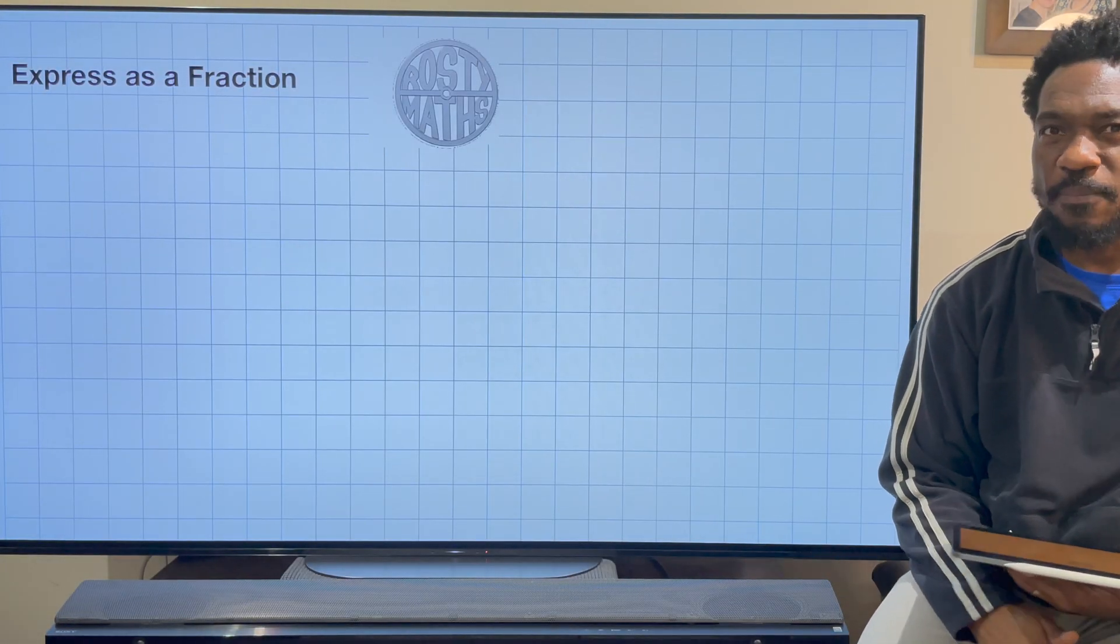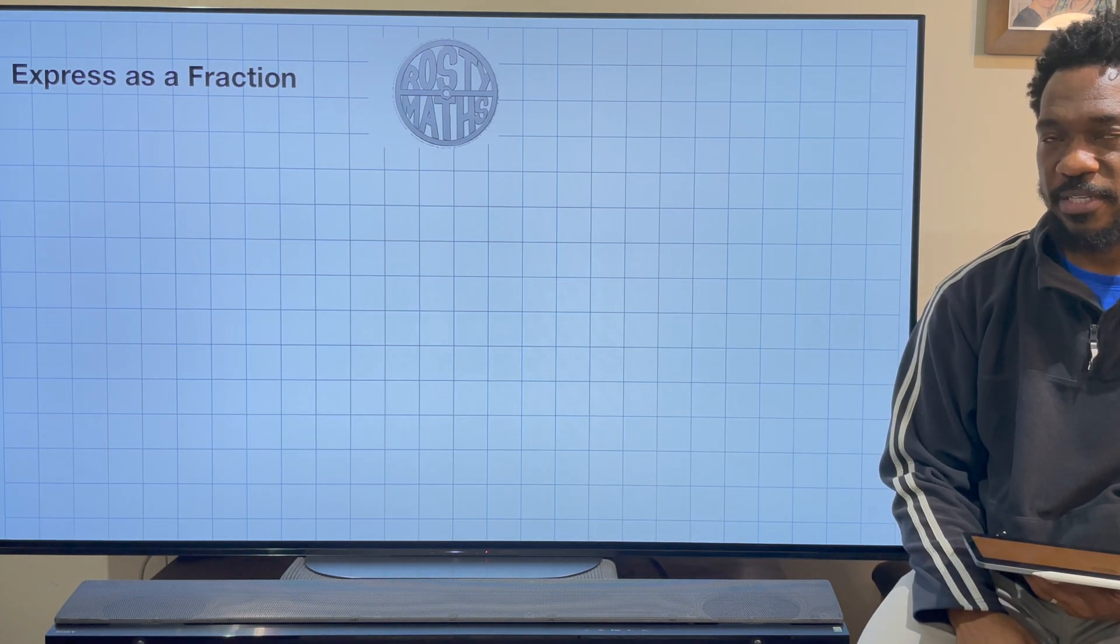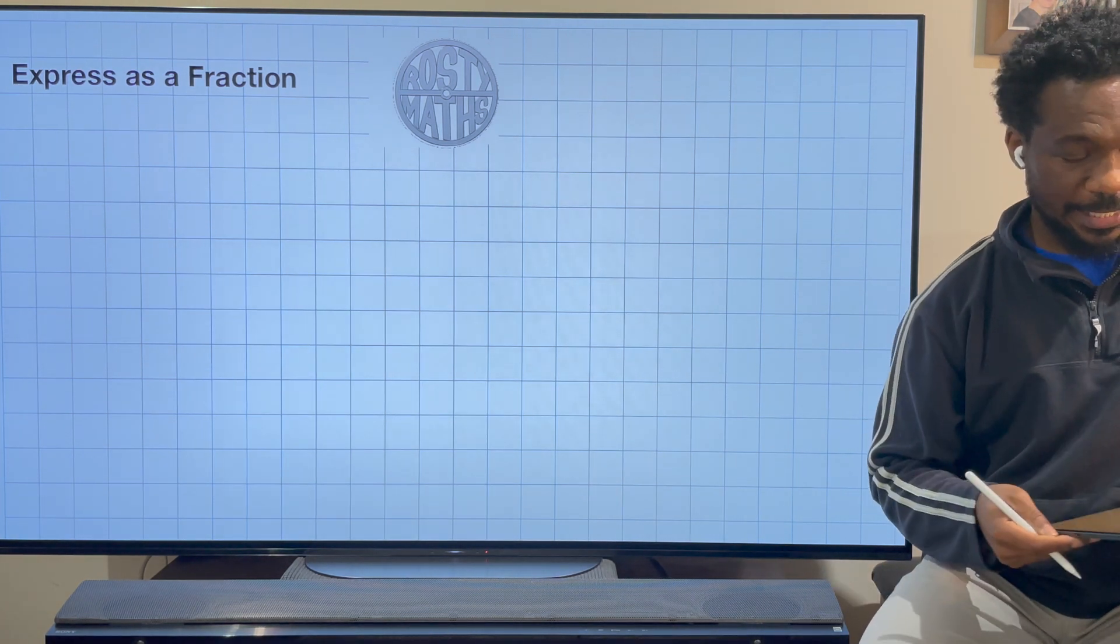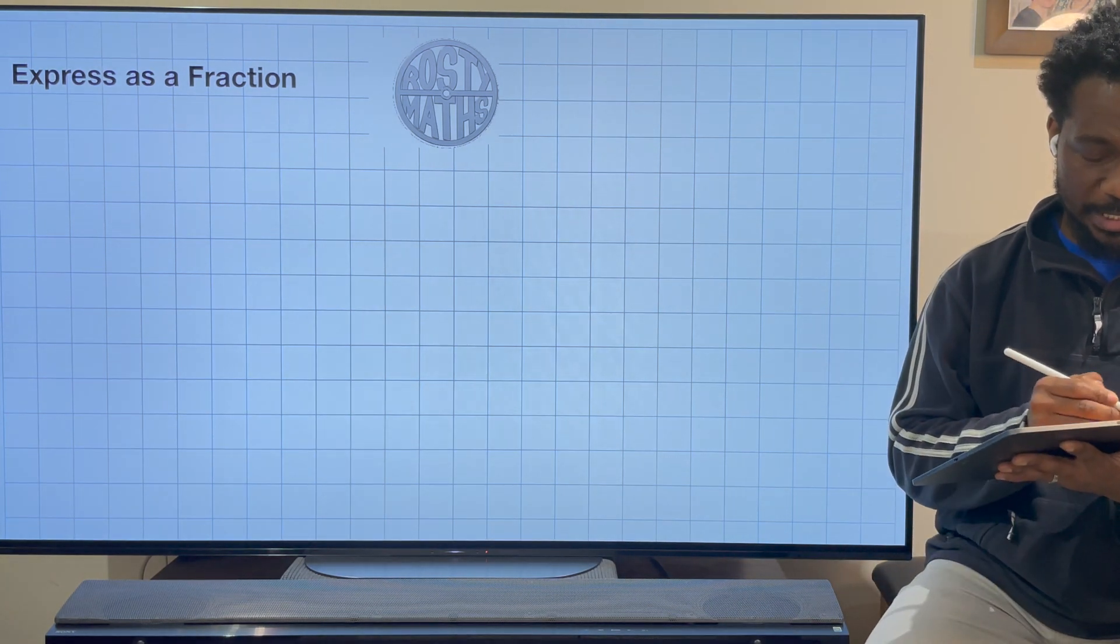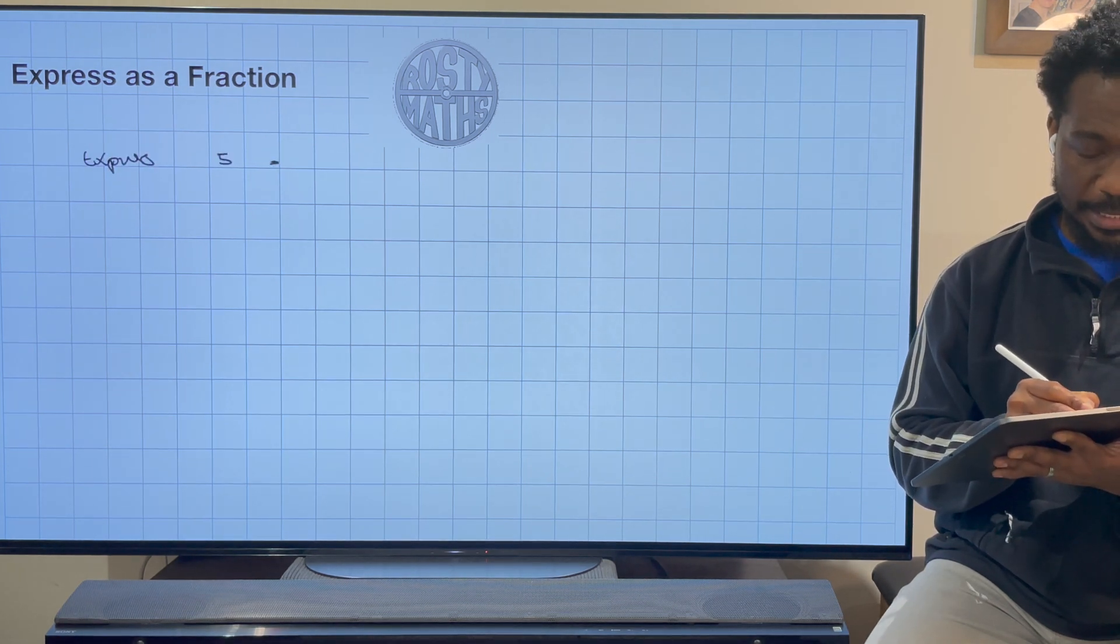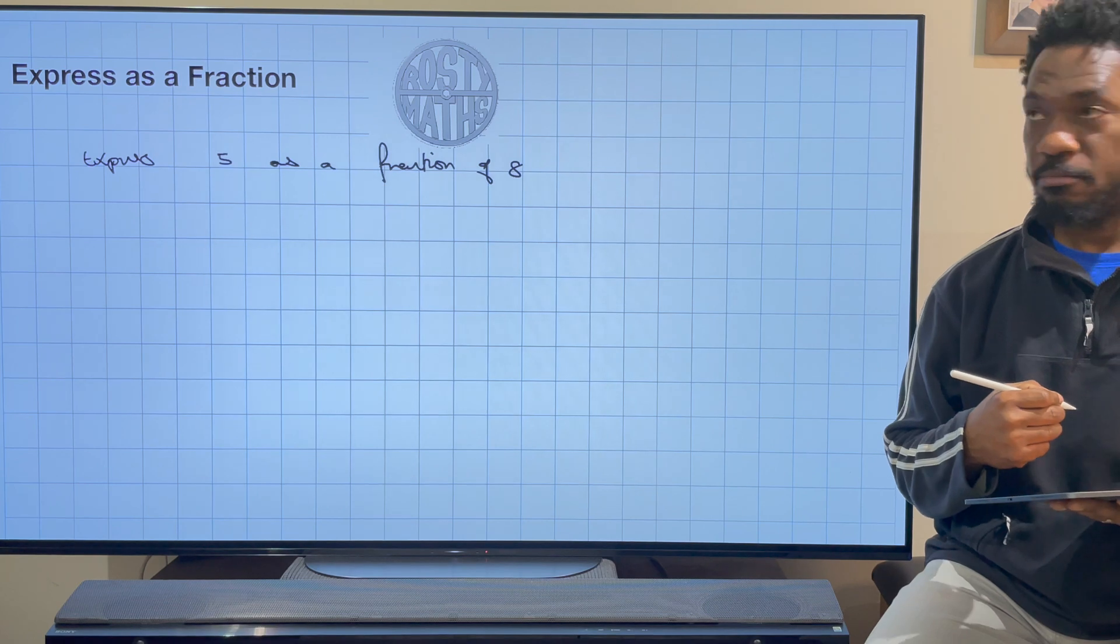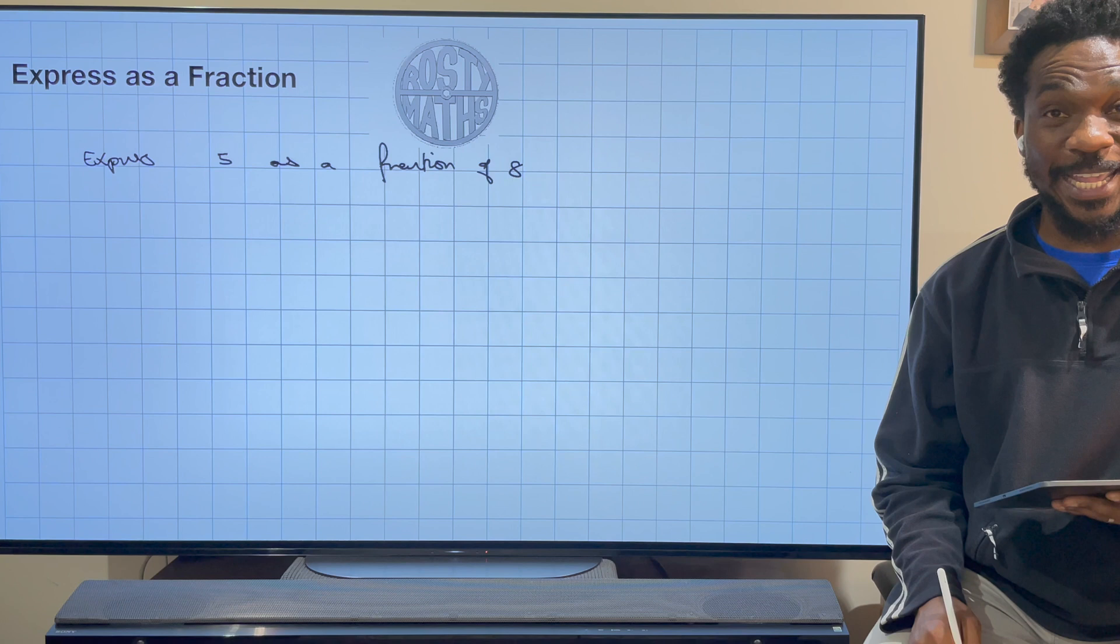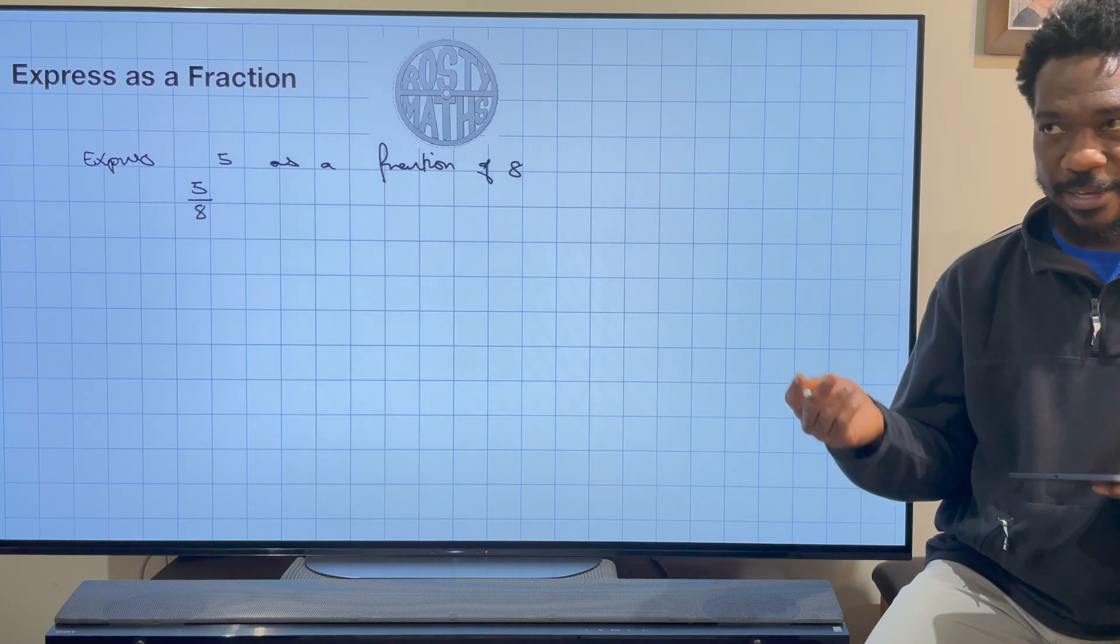We're going to express something as a fraction of something else. We're going to start off with some basic examples first and then go into some things a little bit more complex. Let's say I want to express 5 as a fraction of 8. Well, you would not believe how easy this is. We can pretty much end the video right here because expressing 5 as a fraction of 8 basically means 5 divided by 8, or 5 over 8.